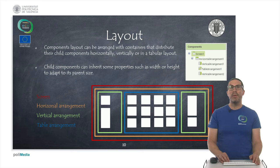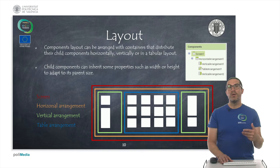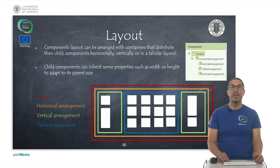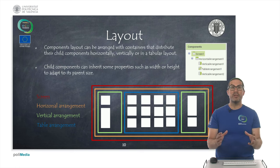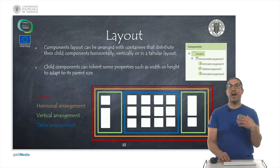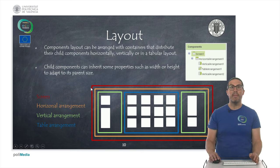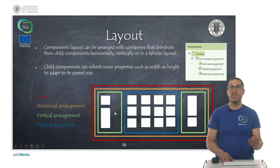Components in our screen will be arranged based on a layout, and for that we use layout components. APP Inventor distinguishes between three types of arrangements: the vertical arrangement, the horizontal arrangement, and the table arrangement. A layout can contain children, meaning a horizontal arrangement can contain other containers with additional components. For instance, we can have a main container that contains a horizontal container, which in turn contains three containers — one vertical, one tabular, and one vertical — and inside them we place components like buttons and images.